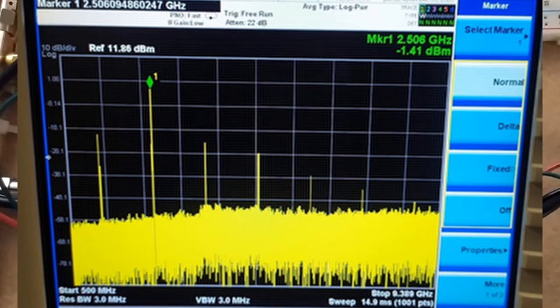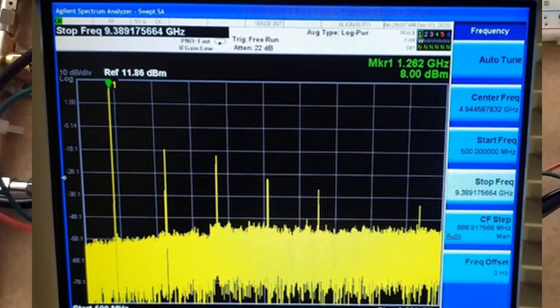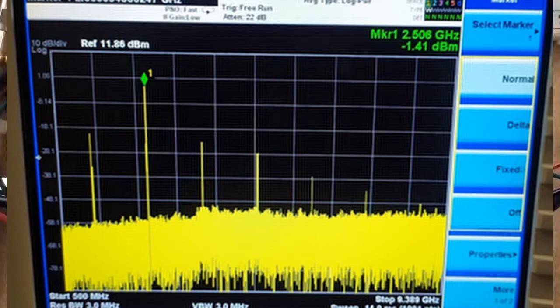Something to notice is that the frequency multipliers have a lot of conversion loss. So we have that 8dBm power output from the VCO, and now it's dropped down to minus 1.41dBm. That's over 9dBm lost due to conversion loss.